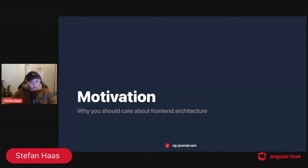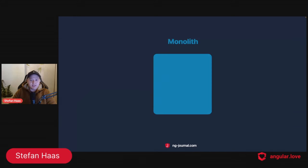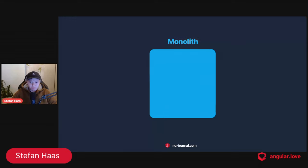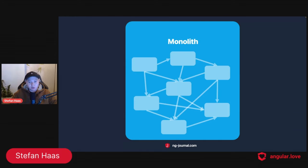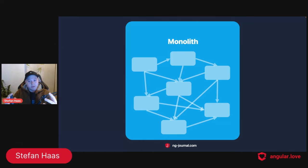For the motivation - why should we even care about front-end architecture and strive for modular monoliths? Let's look at a traditional monolith. It's just a black box where things inside evolve over time without a lot of structure. Components really start to intertwine with each other and it mutates over time to this big ball of mud, as it's called in domain-driven design. The problem is when you have such an intertwined system and make a change in one part, you cannot really predict how it affects the other parts.